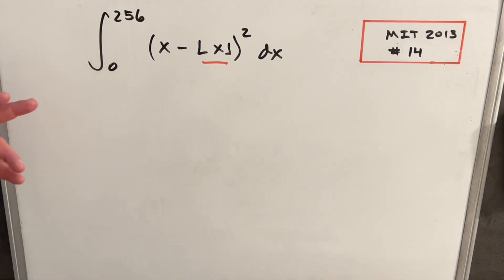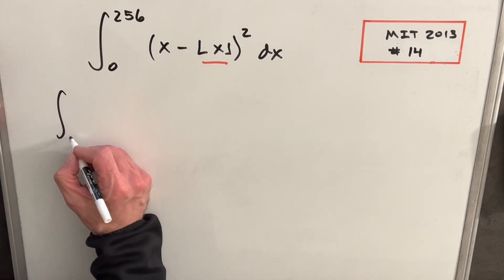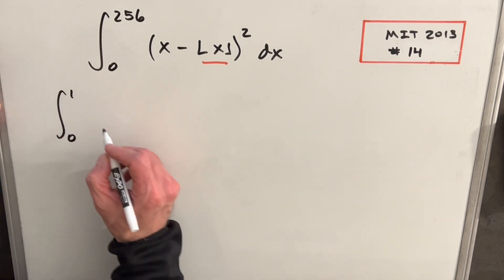So in the case we have here, I think what I want to do to get a better feel for how the floor function is going to work is to just break this integral up into different intervals, like we could break this up from 0 to 1.